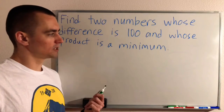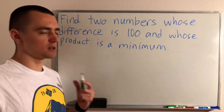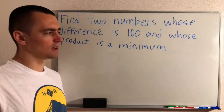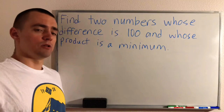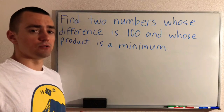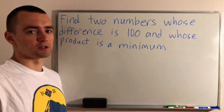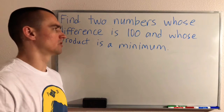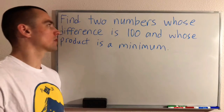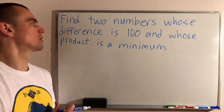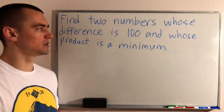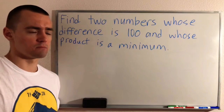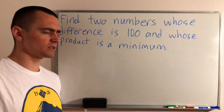Hey guys, Jake here coming at you with another math problem. Today's problem — and you can use this method to solve other similar optimization problems — is: we're going to find two numbers whose difference is 100 and whose product is a minimum.